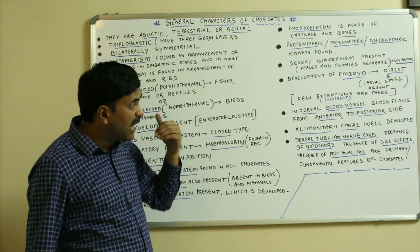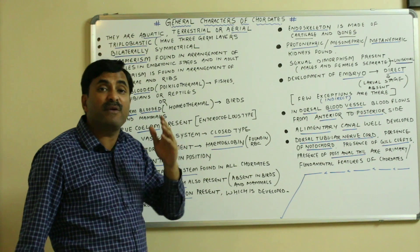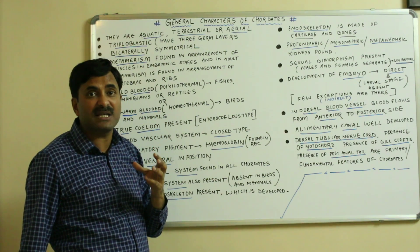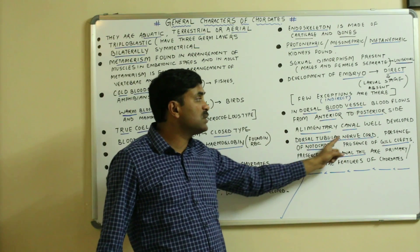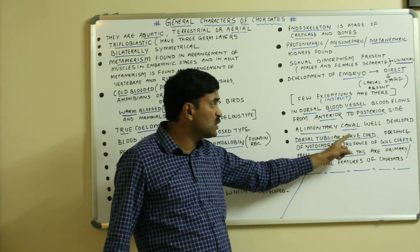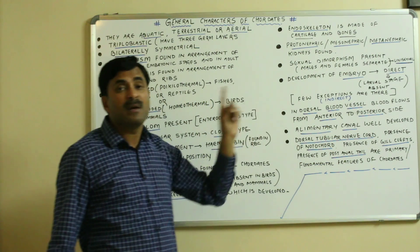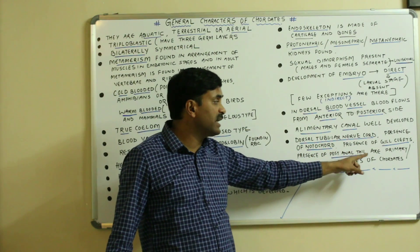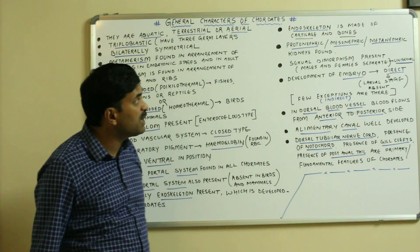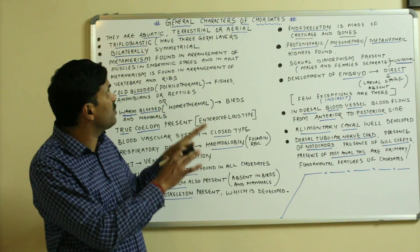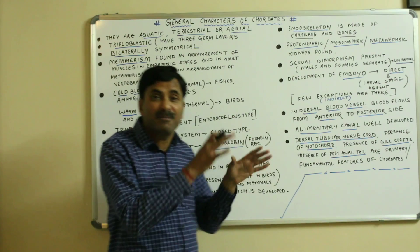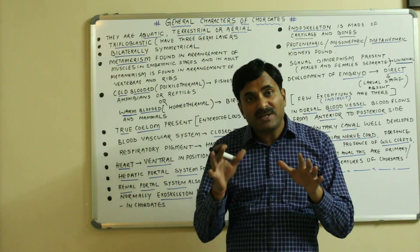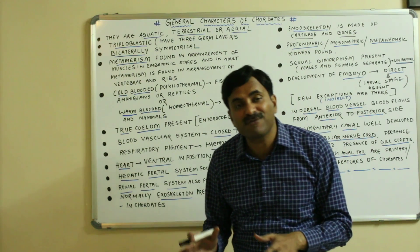There are four fundamental features of chordates which are definitely found in any stage of their lifespan: presence of a dorsal tubular nerve cord, presence of a notochord, presence of pharyngeal gill clefts, and presence of a post-anal tail. These are the primary or fundamental features of the chordates. Thank you for watching.